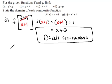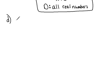Now for the last one, Part D. Part D is asking us to do the G composed of G, or the G of G of X. So the G of G of X.